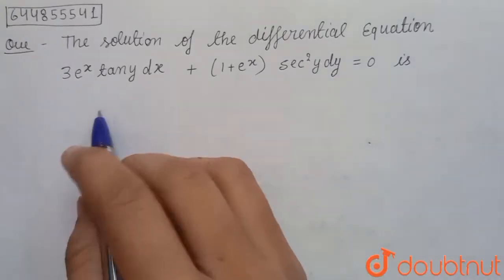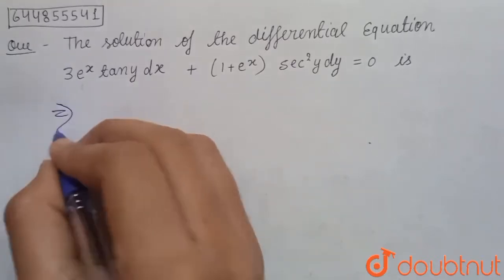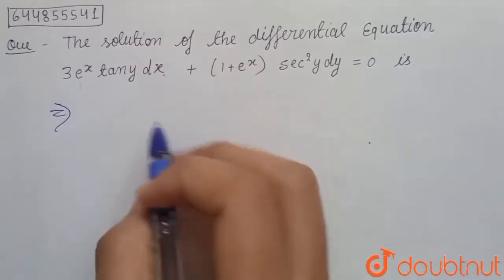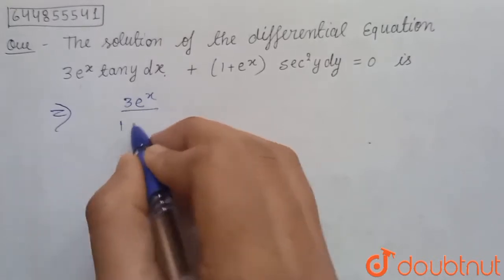So here we can use the variable separable method. That means we will write x terms with dx. So here we can write 3e^x upon 1 plus e^x